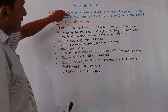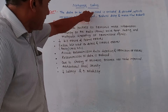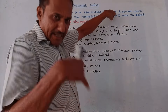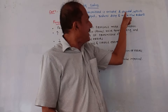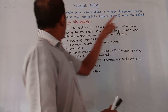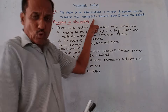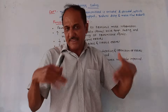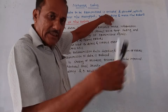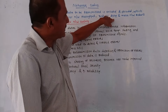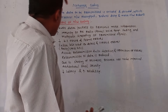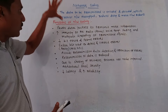So the definition is: data to be transmitted is encoded at the transmitter end and decoded at the receiver end, which increases network throughput, reduces delay for transmission, and makes the network robust. This is the definition of network coding.